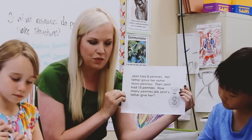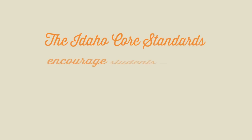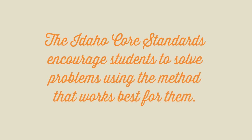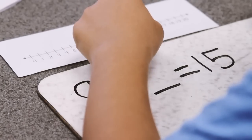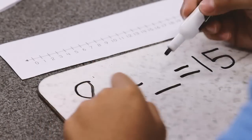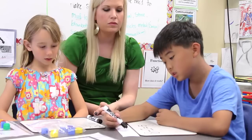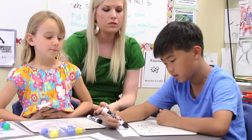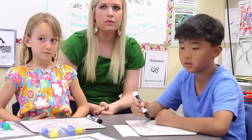Go ahead and solve your problem. I used a number line. I solved this problem. I started at eight and I counted up to 15 — one, two, three, four, five, six, seven. So I got seven.